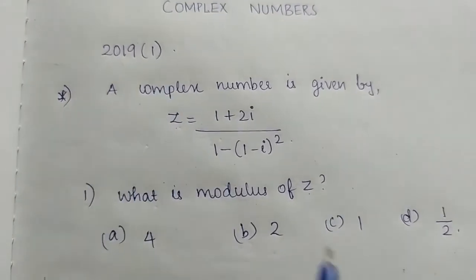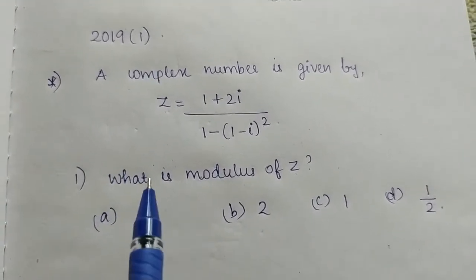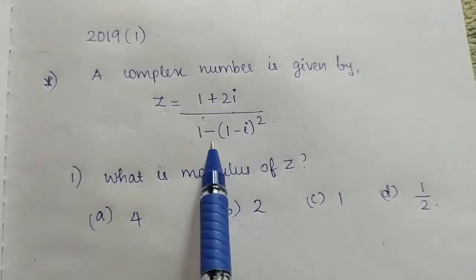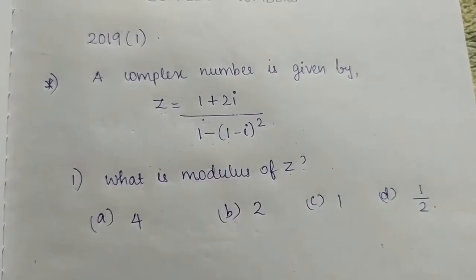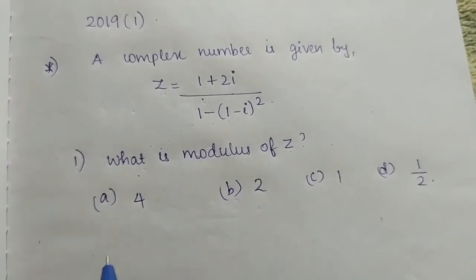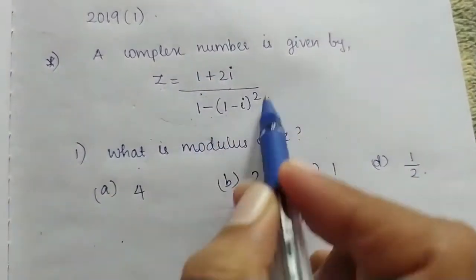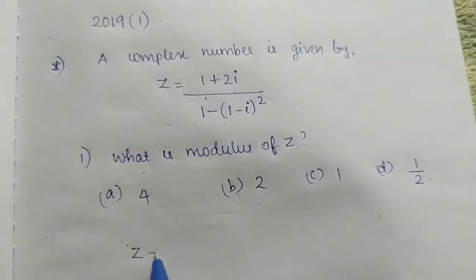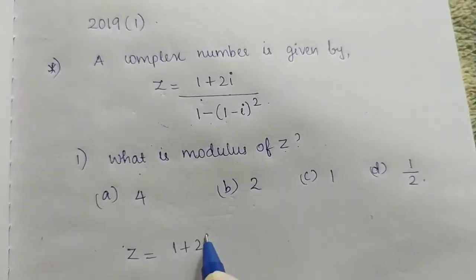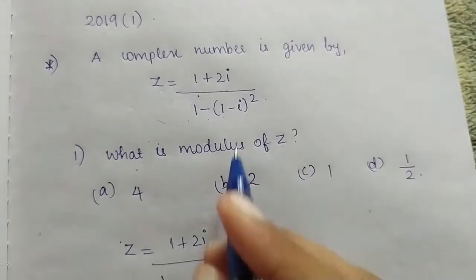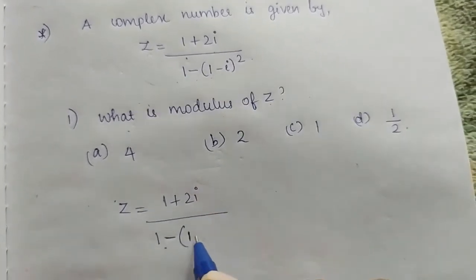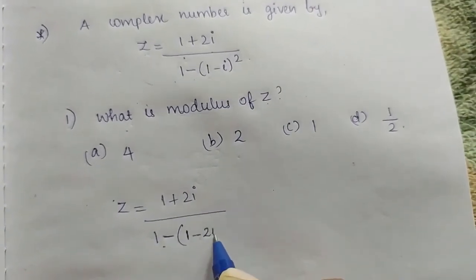In 2019, we have a complex number z equal to 1 plus 2i divided by 1 minus i, the whole square. What is the modulus of z? We have to expand the denominator.